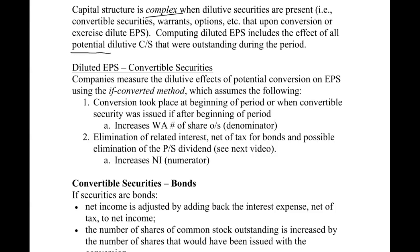We're going to walk through convertible bonds in this video, then convertible preferred stock, then options and warrants, and then put everything together in one bigger problem. With convertible securities — mainly bonds here — we measure the dilutive effect of potential conversion on earnings per share. We call this the if-converted method because we're saying 'what if they were converted.' We assume conversion took place at the beginning of the year, or when the security was issued if it was issued during the year.